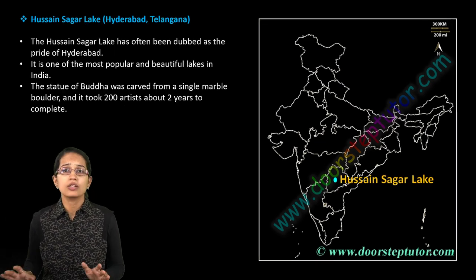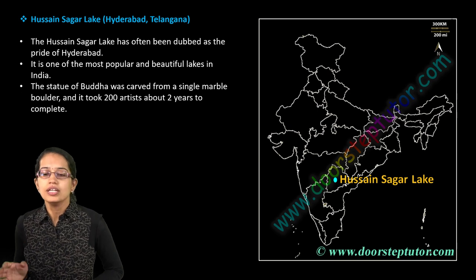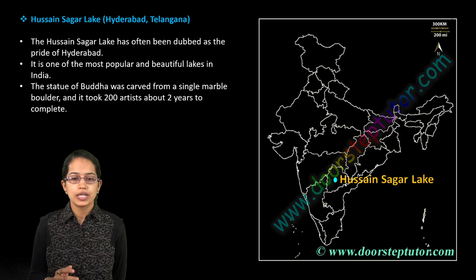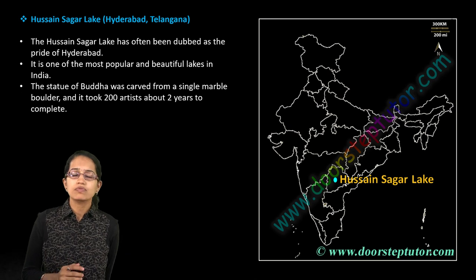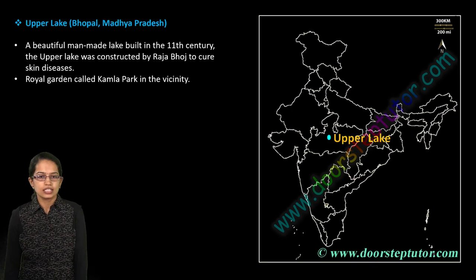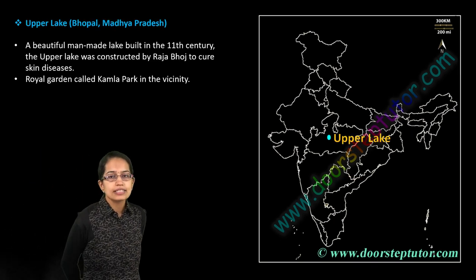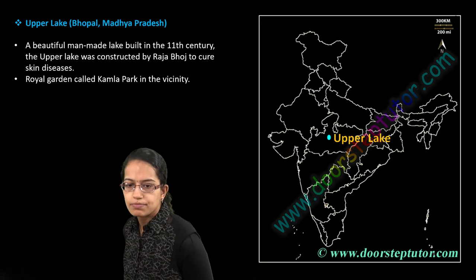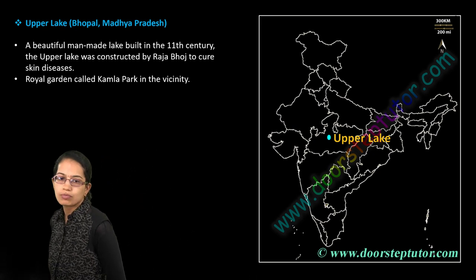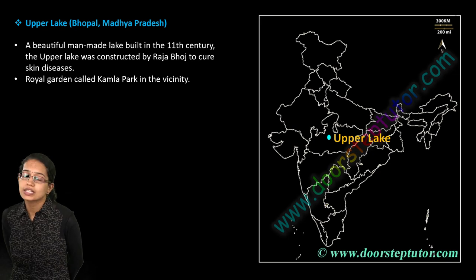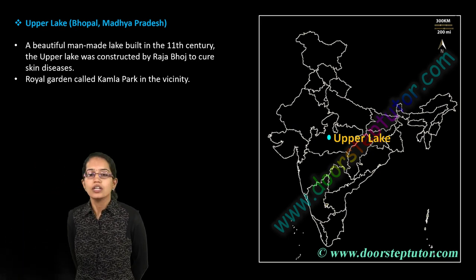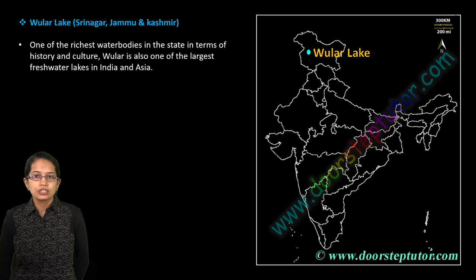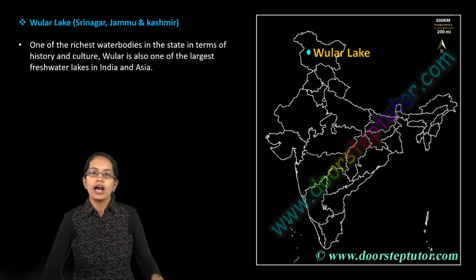Hussain Sagar Lake, located in Hyderabad, is important. It has a statue of Buddha carved from a single marble block and is one of the most popular lakes in the Hyderabad region. Upper Lake lies in the Bhopal area of Madhya Pradesh — a man-made lake built by Raja Bhoj. It was believed to have the capability to cure numerous skin diseases, and there are numerous gardens located close by.